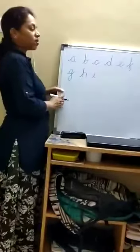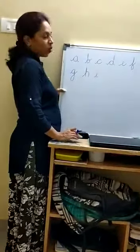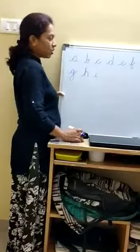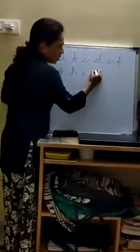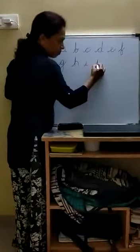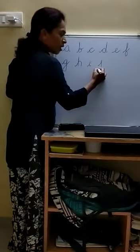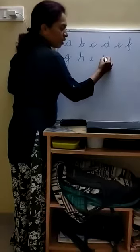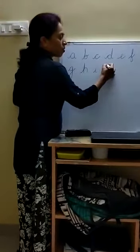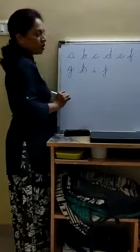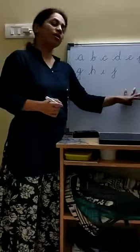Next letter is J. Name of the letter is J. Sound of the letter is J. How to write? Starting from the third line, little up than the second line, come back to the fourth line, take a turn, don't reach to the second line but little nearby that, and small dot. J.